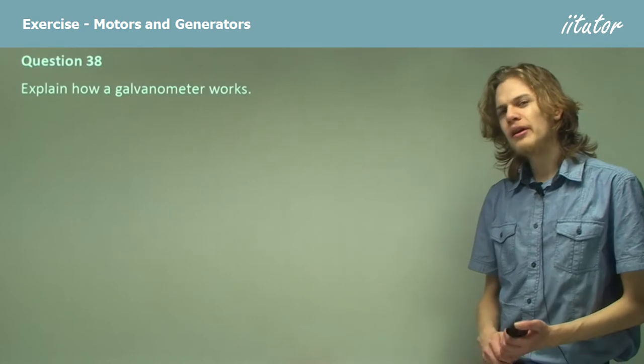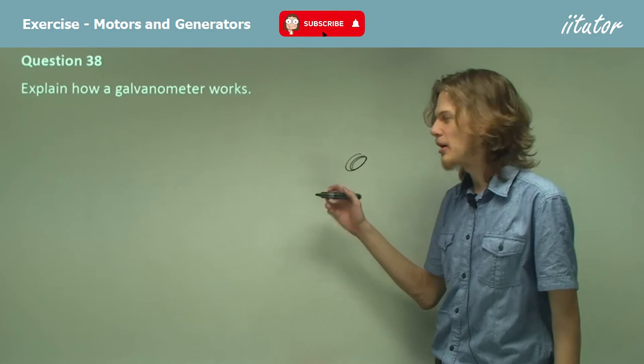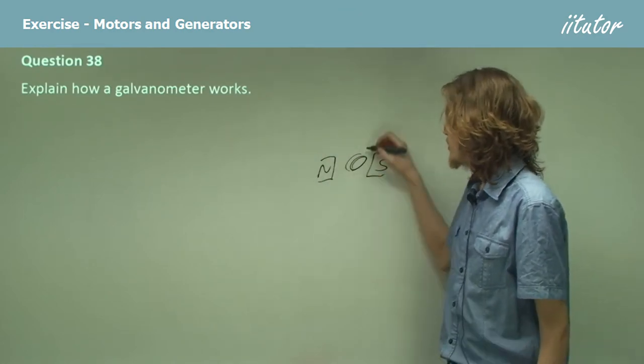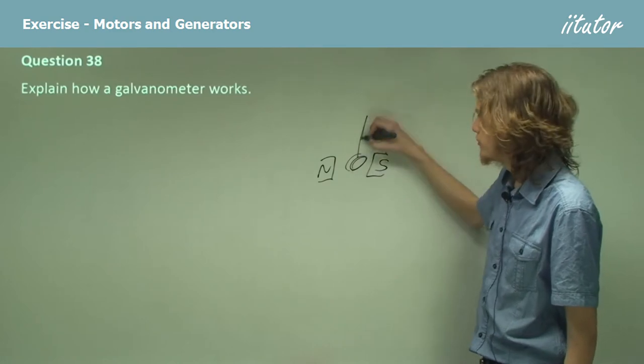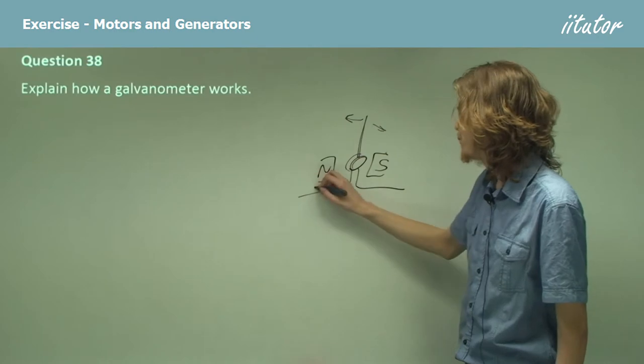Remember that a galvanometer is simply a coil in the presence of a magnetic field that causes a needle to move when a current flows through it.